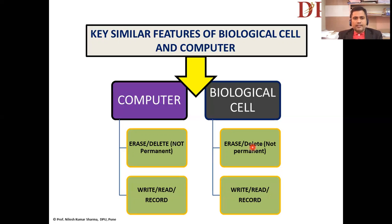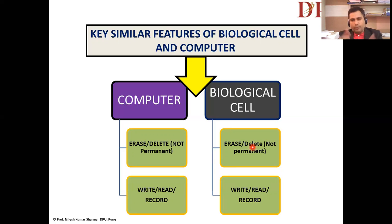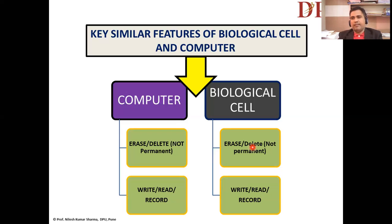Another important feature: computers can erase or delete data. However, in any electronic gadget — computer or mobile — once data or information is written in code or language, it cannot be permanently deleted, only to a certain extent. Similarly, in our biological cell system, data written in the form of chemical languages can be erased or deleted, but it also cannot be permanently deleted from the biological system.